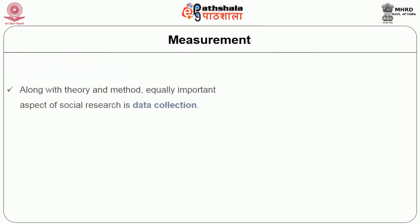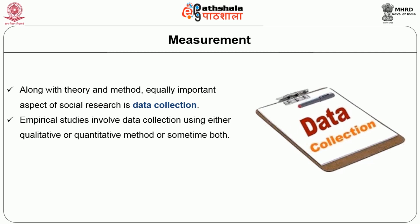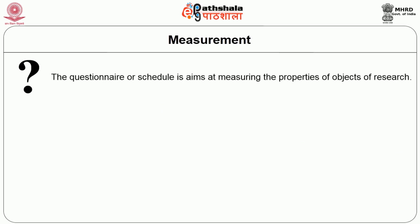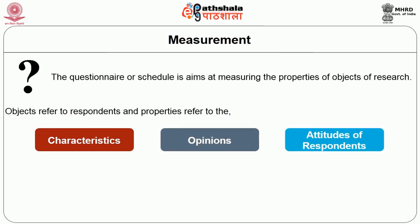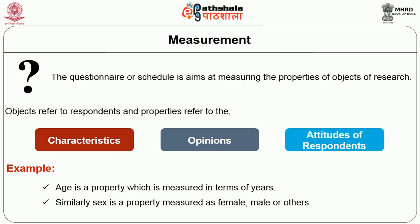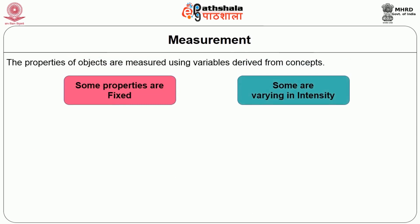Let us look at measurement. Along with theory and method, data collection is an equally important aspect of social research. Empirical studies involve data collection using qualitative or quantitative methods or both. Data collection using survey method aims at recording the properties of objects with the help of a questionnaire or interview schedule. Each question aims at measuring the properties of objects of research — the objects refer to respondents, and properties refer to their characteristics, opinions, and attitudes. For example, age is a property measured in years, while sex is a property measured as female, male, or others. The properties of objects are measured using variables derived from concepts.